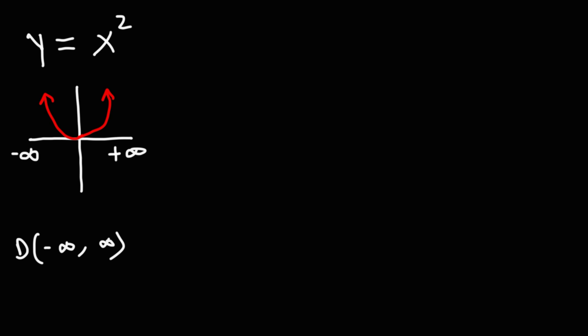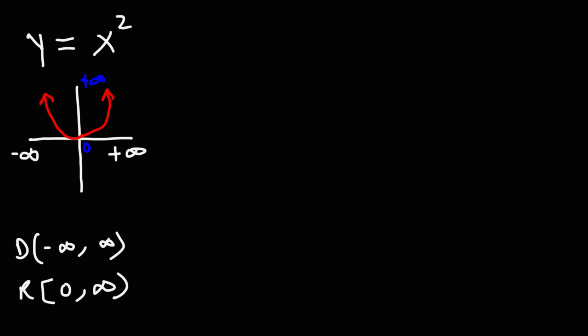Now the range, however, that's going to change. When finding the range, focus on the y values. The lowest y value that we can see here is 0, and this will keep going up to positive infinity. When you see the arrow, it means it can keep going up forever. So looking from low to high, it's going to be from 0 to infinity. But 0 is included, so we're going to use a bracket for 0.